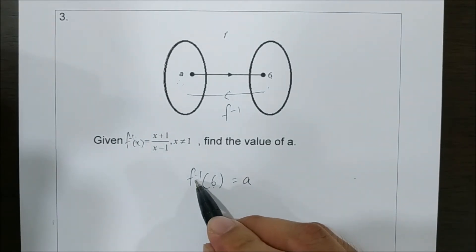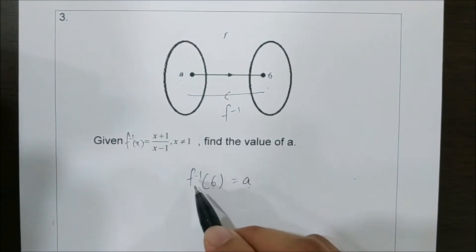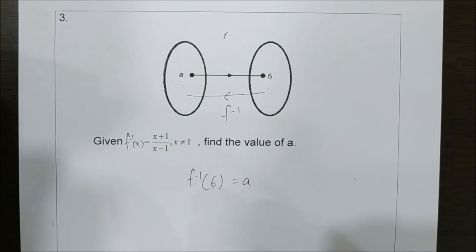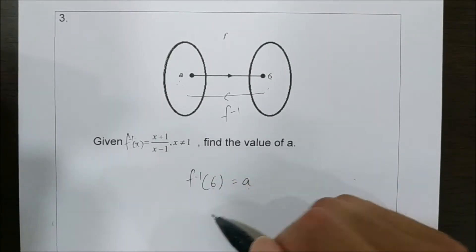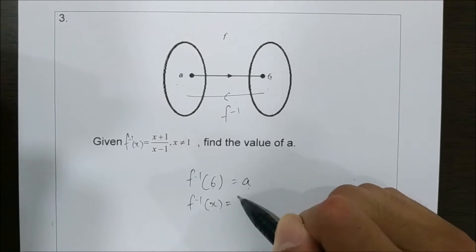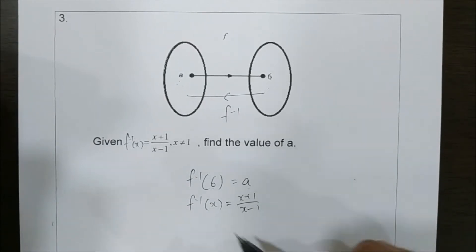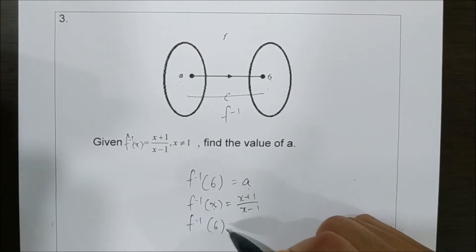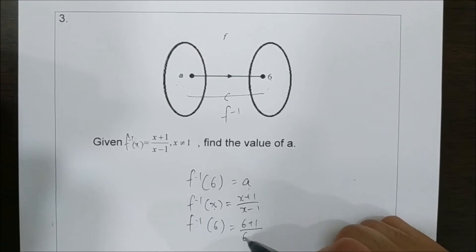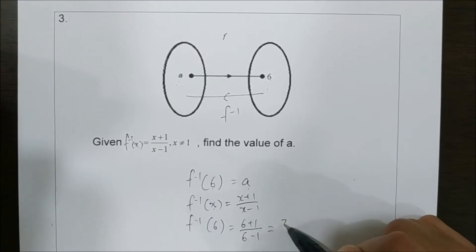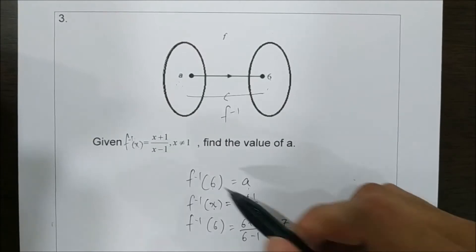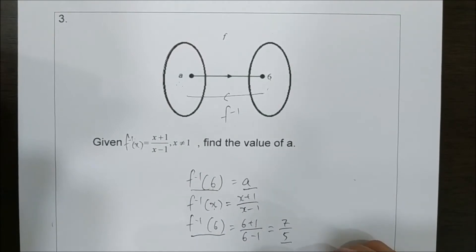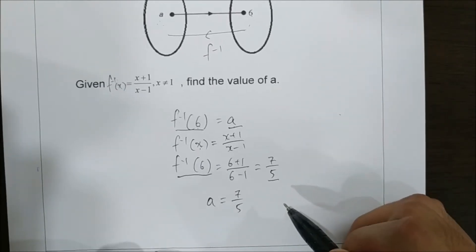So 6 is the object for f inverse and a is the image of f inverse. If we compare this to f inverse of x equals to x plus 1 over x minus 1, and replace x with 6, we get 6 plus 1 over 6 minus 1, which is 7 over 5. Since f inverse of 6 equals a, meaning that a equals to 7 over 5. That is the answer.